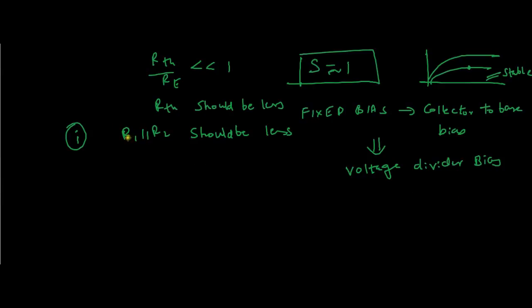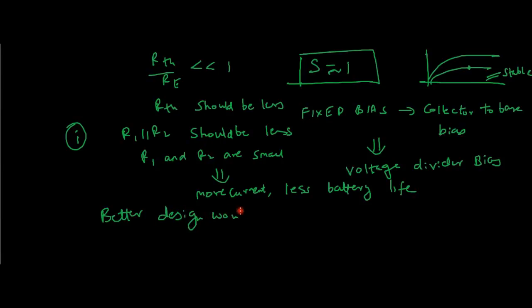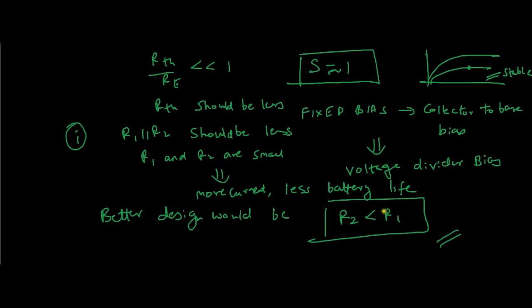However, you shouldn't choose both R1 and R2 to be too small, because in that case your circuit will draw more current, meaning less battery life. A better design would be to choose R2 less than R1. Choose values in this way and your circuit will be stable — it is the best design possible.